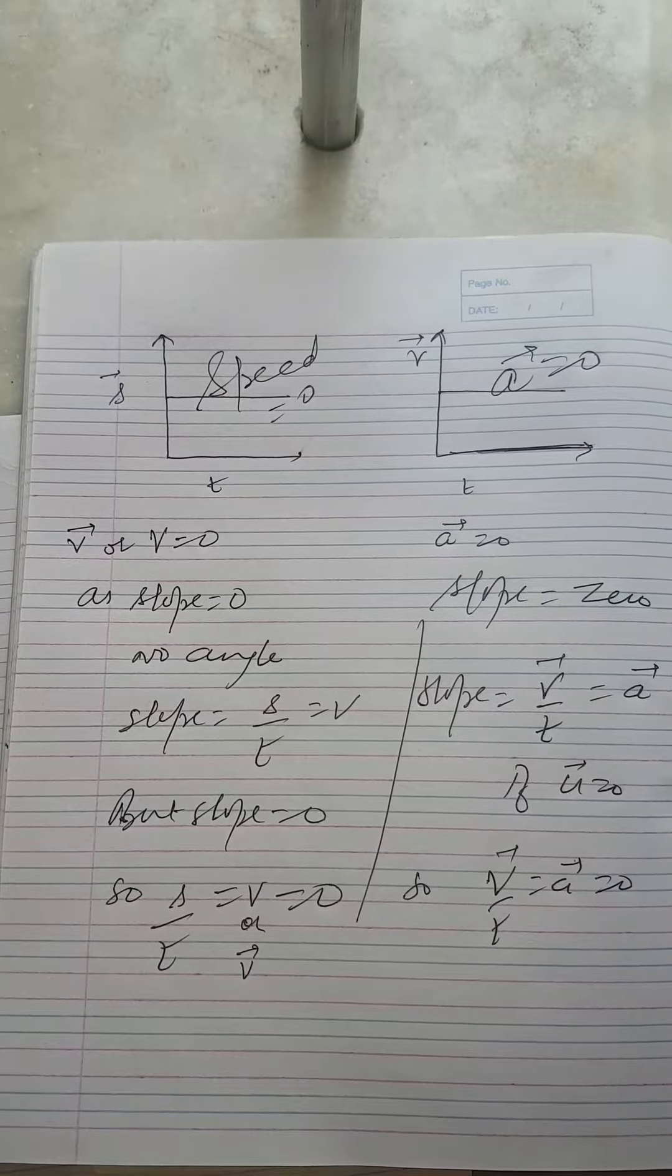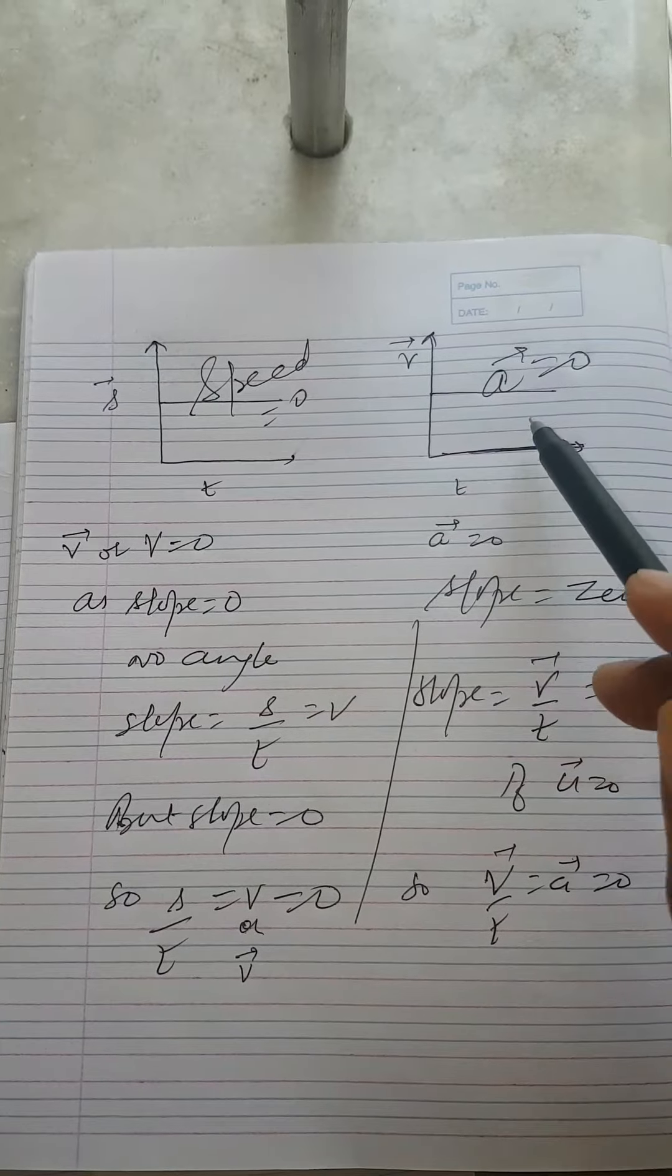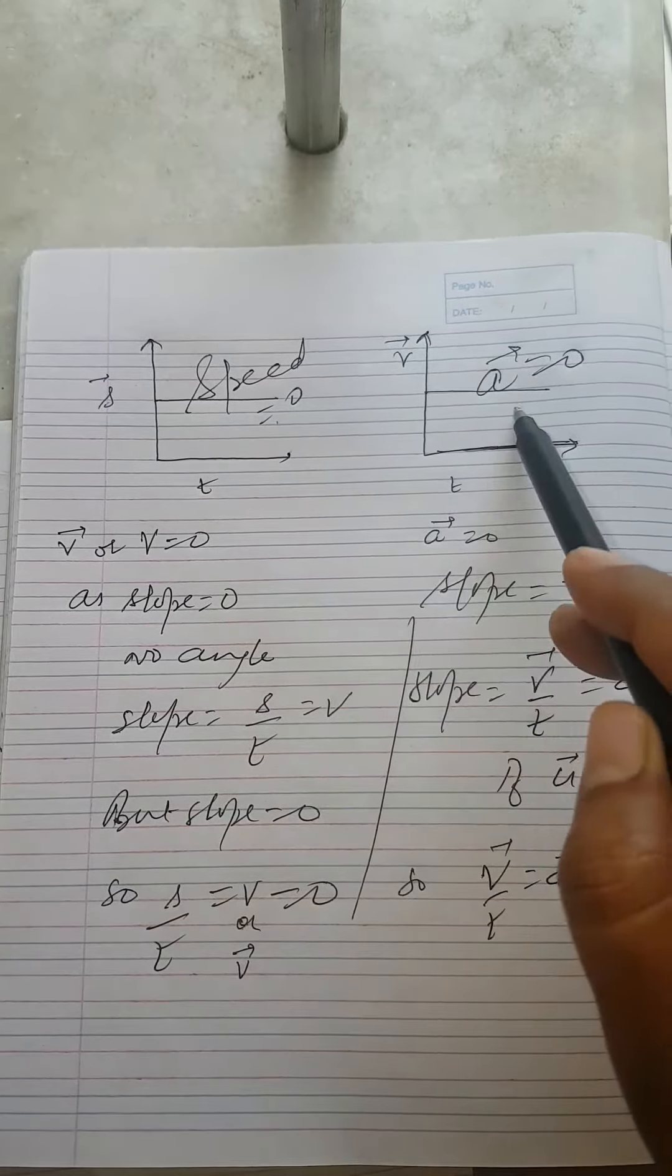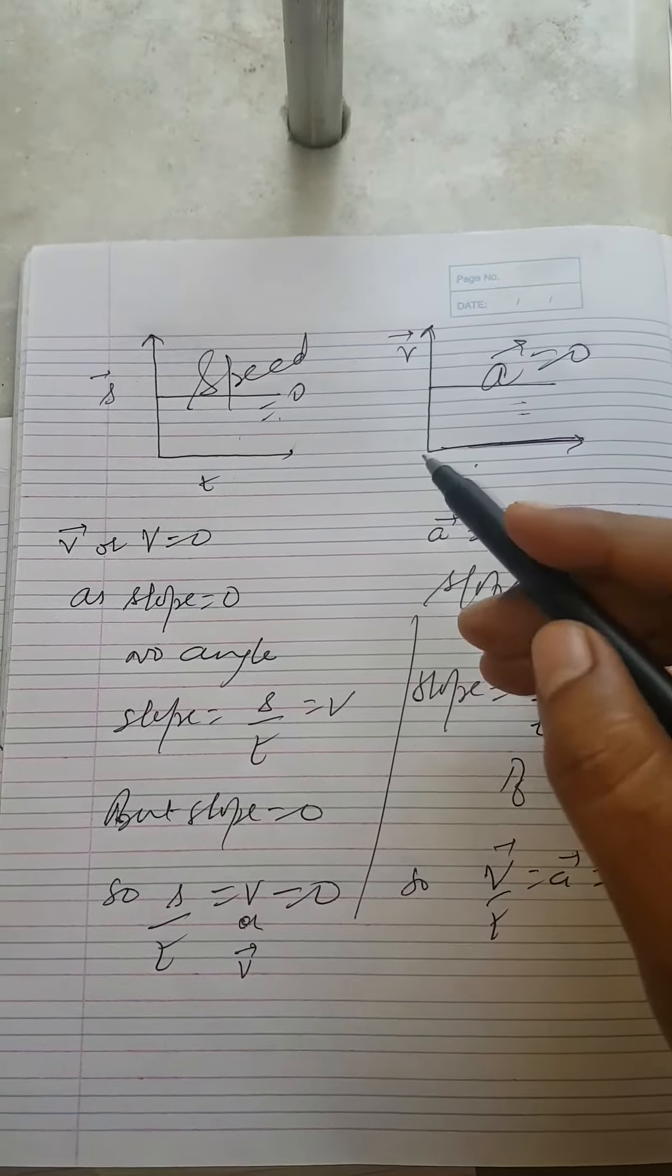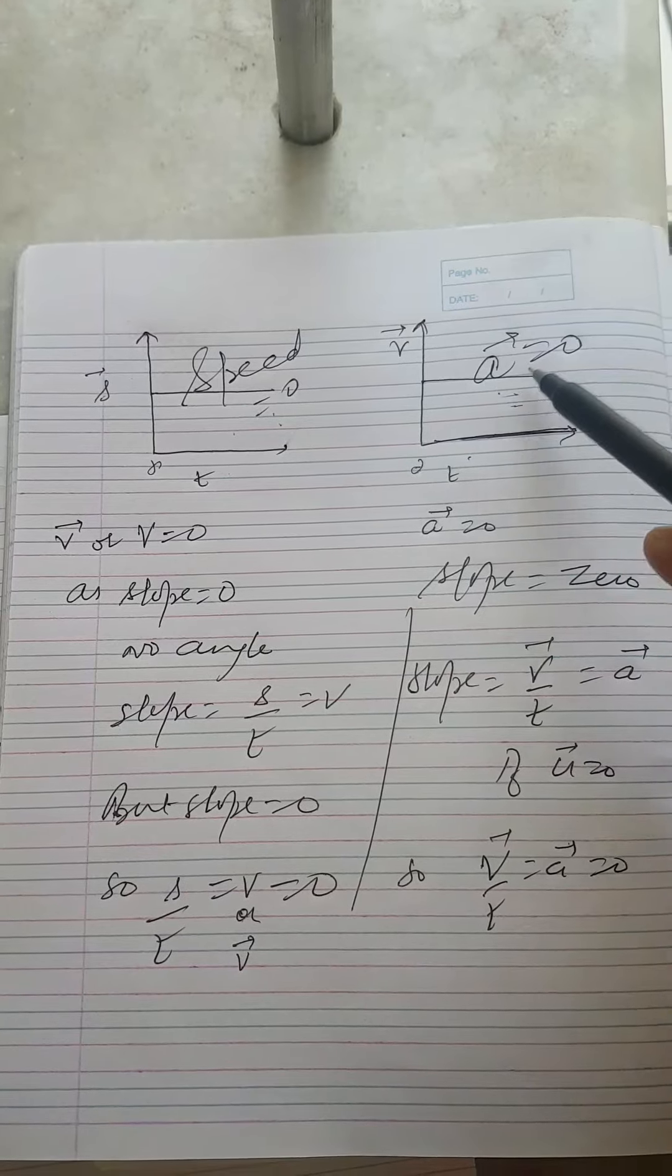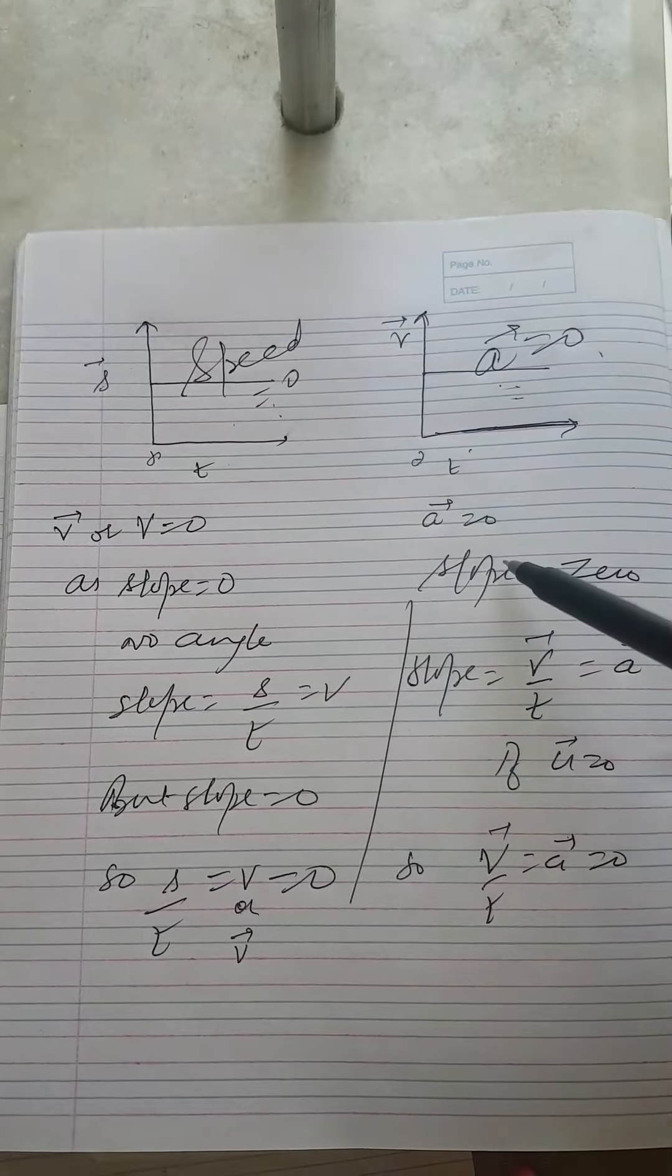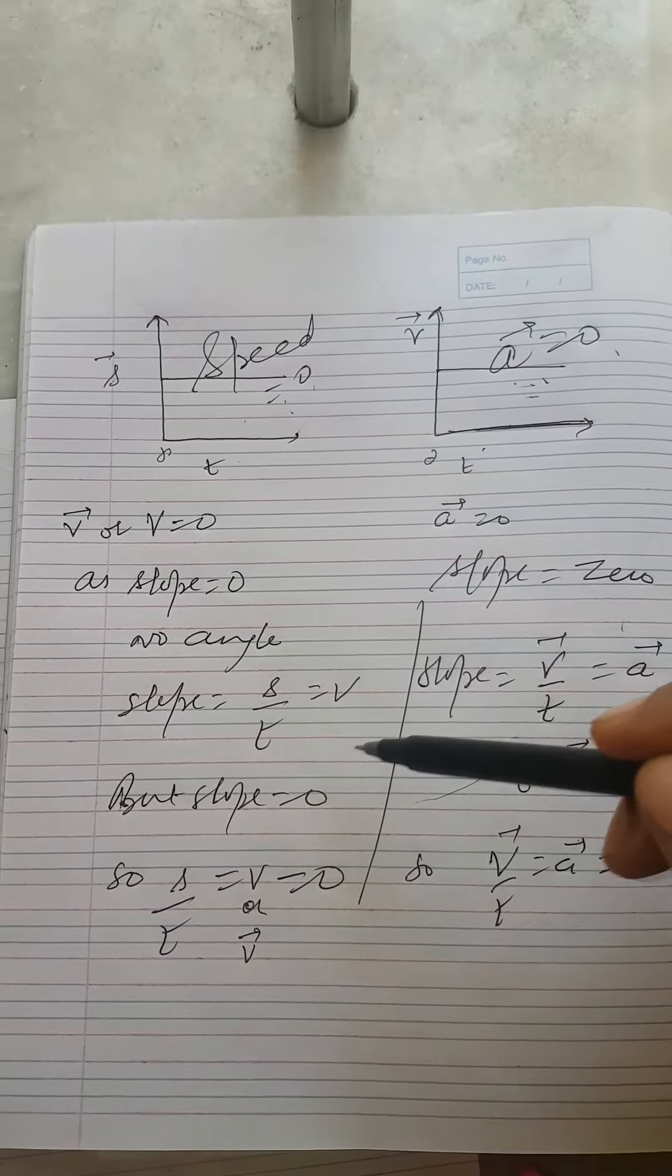So welcome students, in this video, this is very interesting video. This is the mathematical explanation of these two graphs. In these two graphs, this ST and VT graph, we have done that speed equals to zero and here acceleration equals to zero. So here I have come up with the explanation of these two things via the concept of slope.